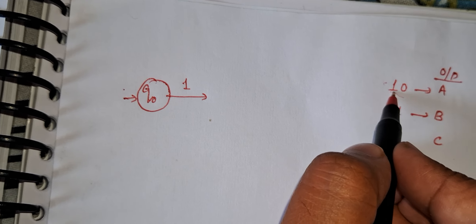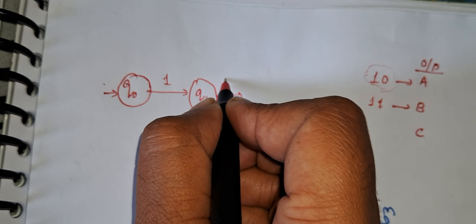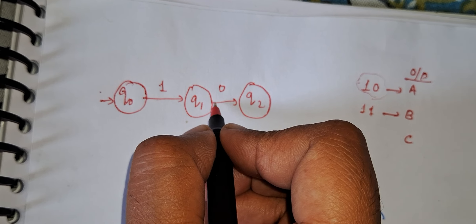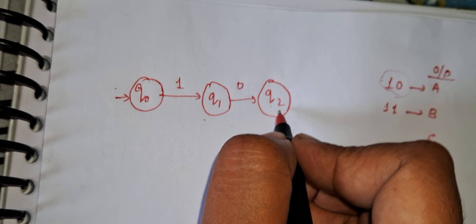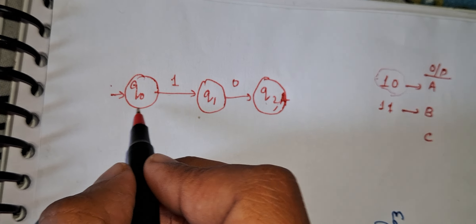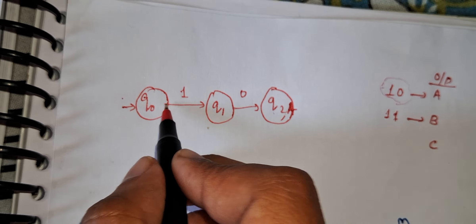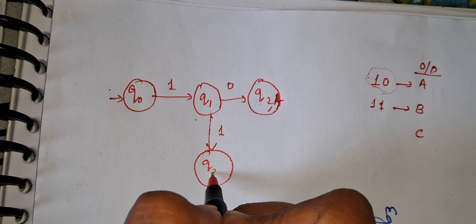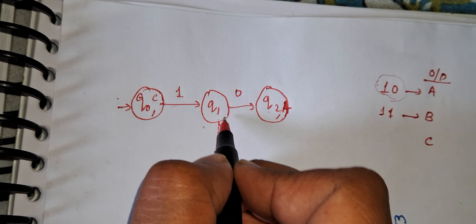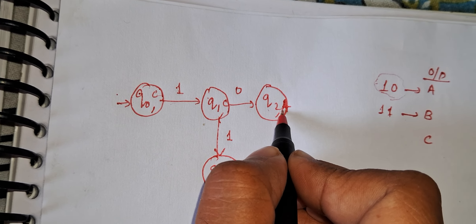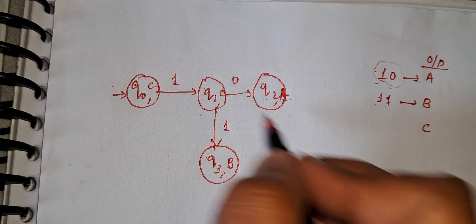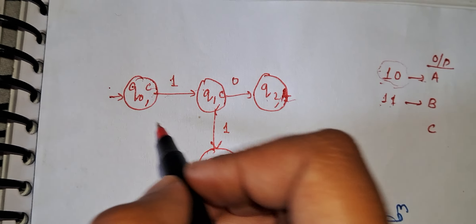So q0 is the starting state. We draw the skeleton for '10': q0 on 1 goes to q1, q1 on 0 goes to q2 — whenever we reach q2 the input ends with '10' and it produces output A. Then for '11': from q1 if we see input '1' that is the '11' case, it produces output B. At q2 output is A, at q3 output is B, otherwise output C.